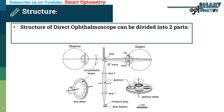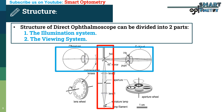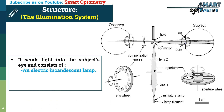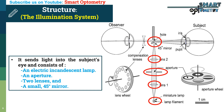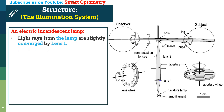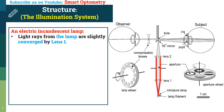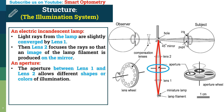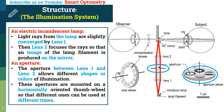The structures of the ophthalmoscope can be divided into two parts. The illumination system sends light to the subject's eyes and consists of an electric incandescent lamp, an aperture, two lenses, and a small 45-degree mirror. Light rays from the lamp are slightly converged by lens 1, then lens 2 focuses the rays so that an image of the lamp filament is produced on the mirror. The aperture between lens 1 and lens 2 allows different shapes and colors of illumination, and these apertures are mounted on a horizontally-oriented thumb wheel so different ones can be used at different times.